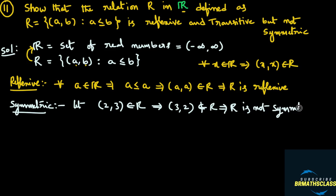When proving reflexivity, we generalized the statement: for every real number A, the ordered pair (A, A) belongs to R. When proving something is not symmetric, not reflexive, or not transitive, you just give a counter example. Here, I took the ordered pair (2, 3) which belongs to R and proved that the ordered pair (3, 2) does not belong to R.